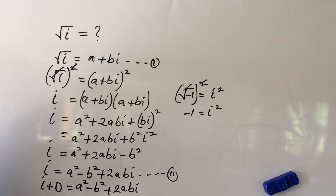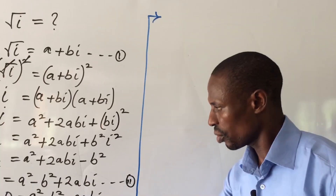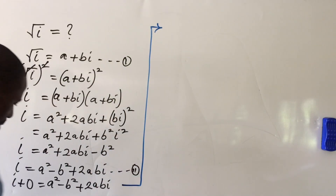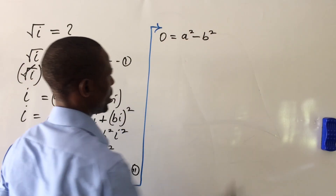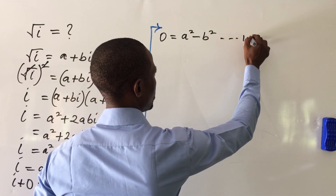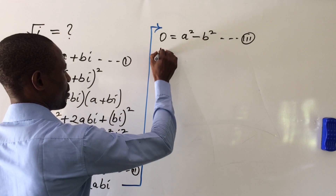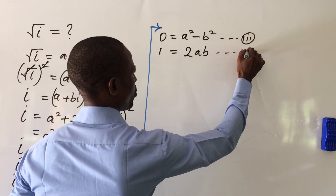The zero on the left is the real number part, and a² − b² is the real number part on the right. Comparing coefficients: comparing the real parts gives us equation three: a² − b² = 0. Comparing the imaginary parts gives us equation four: 2ab = 1.